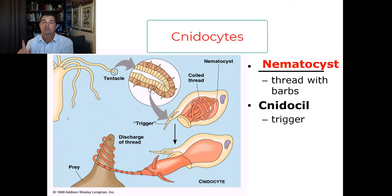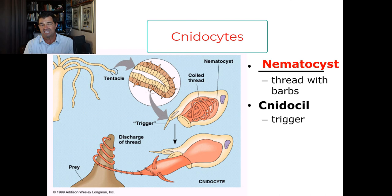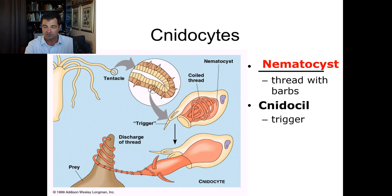What's notable about cnidarians is they have specialized stinging cells called cnidocytes. Cnidocytes are the stinging cell, and inside a cnidocyte is a specialized stinging structure called a nematocyst. When the nematocyst is fired, it stings prey — fish, or whatever, even a human. They often have some kind of toxin that goes along with it, and this is what cnidarians typically use for feeding.